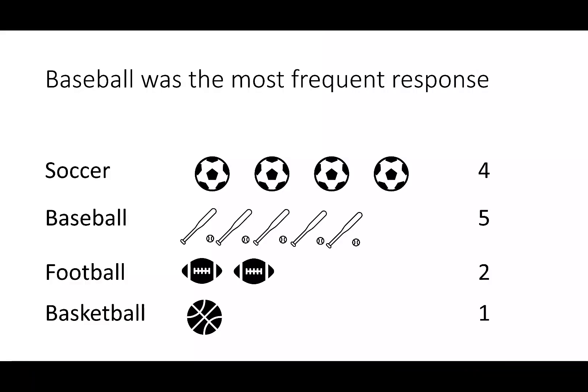This is a good example of a time that bias could be unintentional. Someone could have included pictures to make the graph more interesting. But because the size of the baseball and baseball bat are smaller, it could lead the reader to the wrong conclusion of the data.